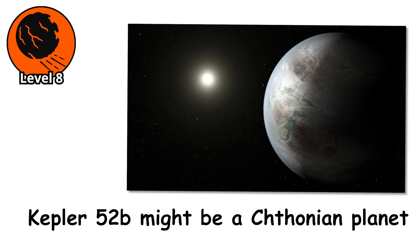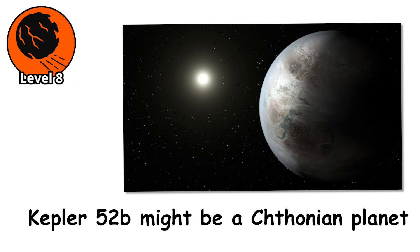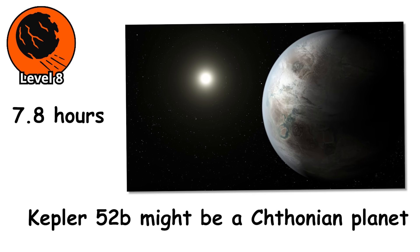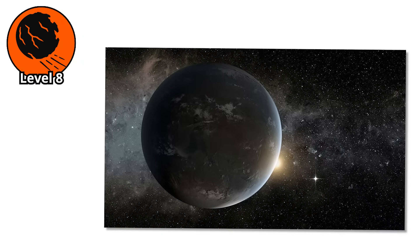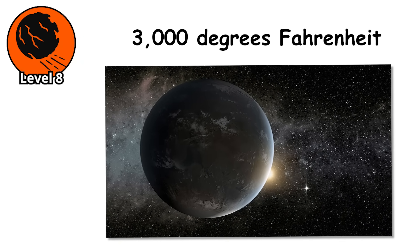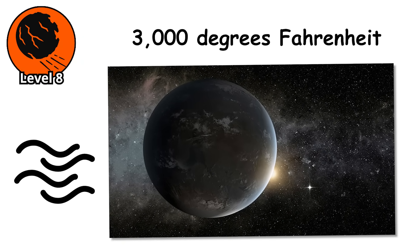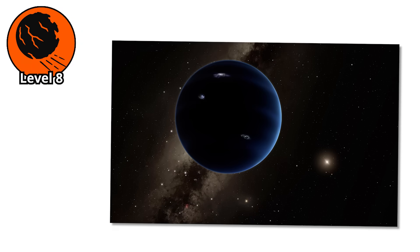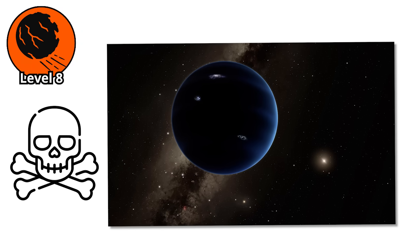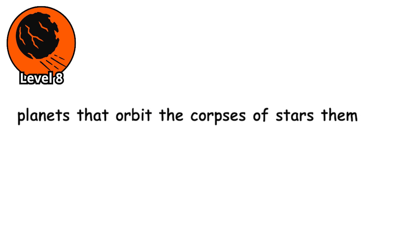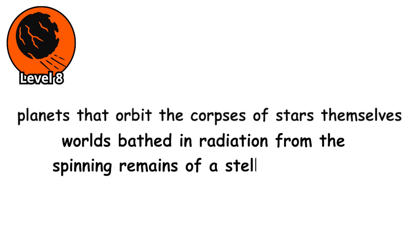Kepler-52b might be a Chthonian planet. It orbits its star every 7.8 hours at a distance of just 2 million miles. The surface temperature is estimated at over 3,000 degrees Fahrenheit, and if it once had an atmosphere, it's long gone now. These are the ghosts of planets killed by their stars. But there's something even more disturbing - planets that orbit the corpses of stars themselves. Worlds bathed in radiation from the spinning remains of a stellar explosion.